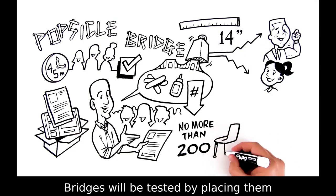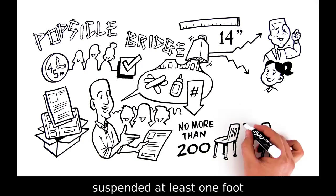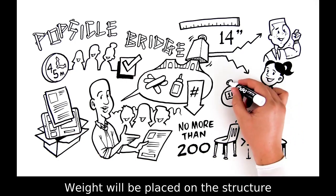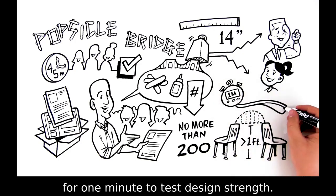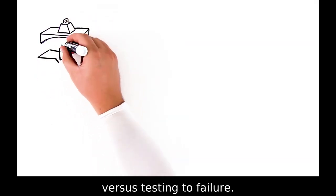Bridges will be tested by placing them between two chairs, so it's important that the bridges are designed so that they can be suspended at least one foot above the floor. Weight will be placed on the structure for one minute to test design strength. The goal is to test to success versus testing to failure.